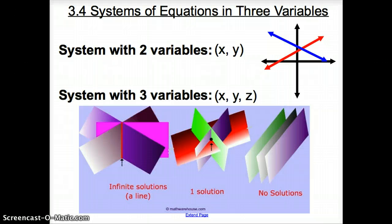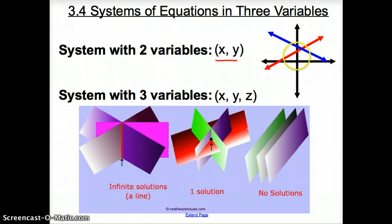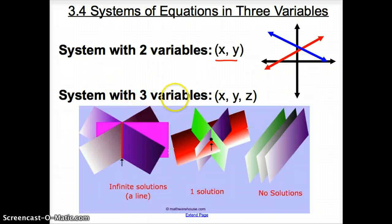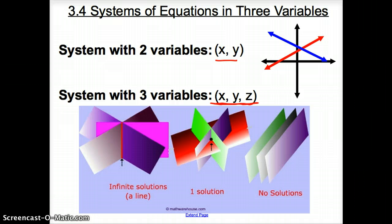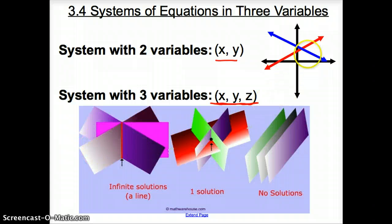Before we get to three variables, we're going to talk a little bit about two variables. A system with two variables, like x and y, would give us a coordinate plane — it would give us lines. But now, with a system with three variables — x, y, and z — that's how our answers are going to be today.